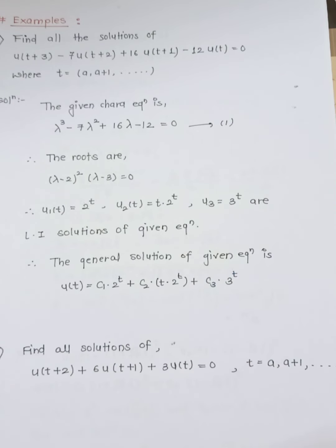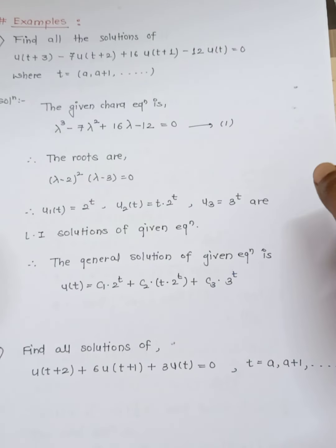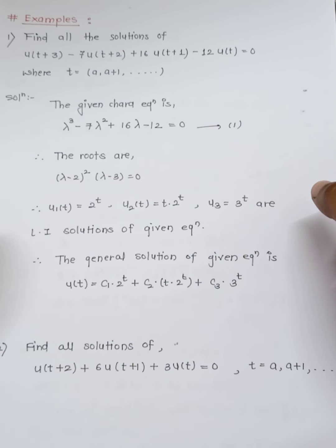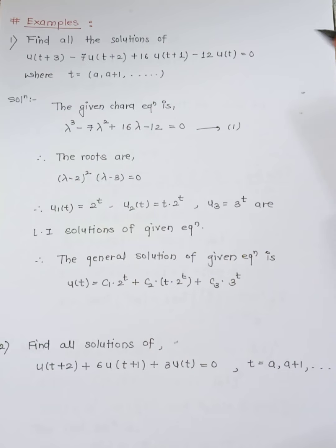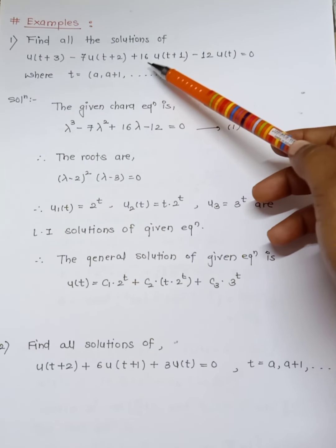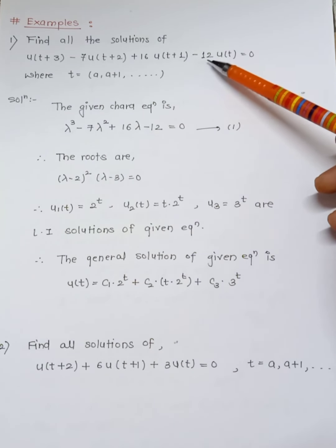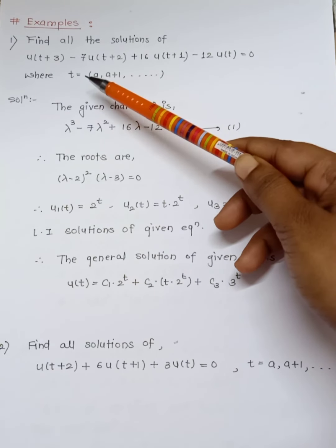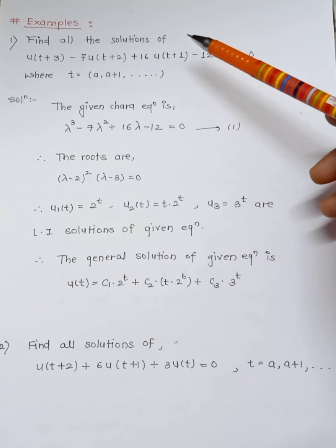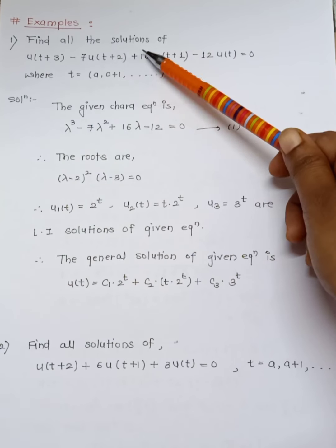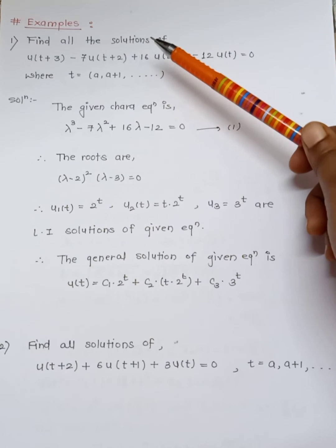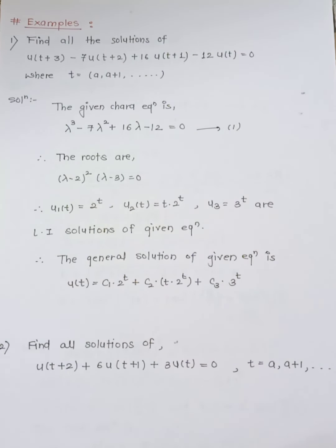In the last video we have seen how to solve linear equations. The question is: find all the solutions of u(t+3) - 7u(t+2) + 16u(t+1) - 12u(t) = 0, for t = a, a+1, a+2, and so on. We need to apply the method and find all solutions.